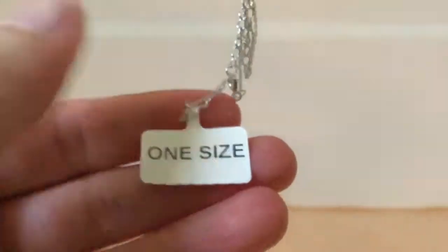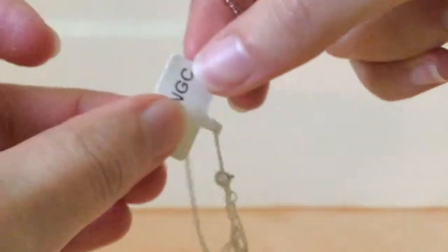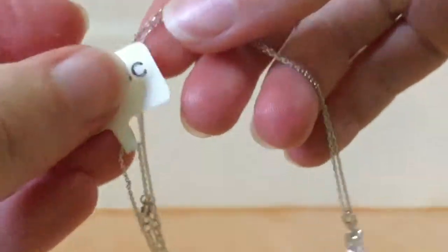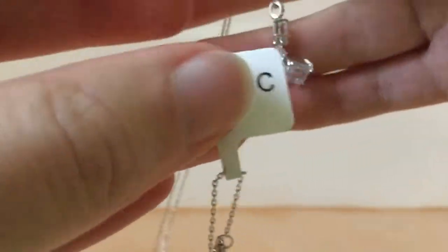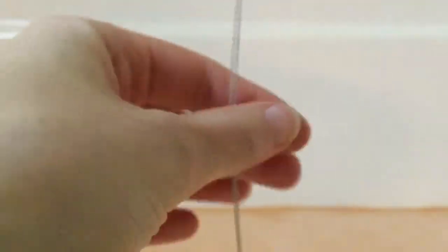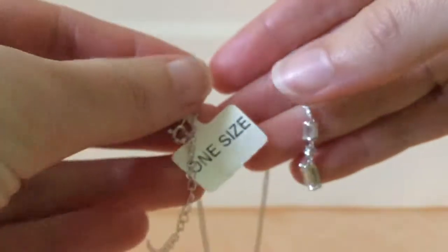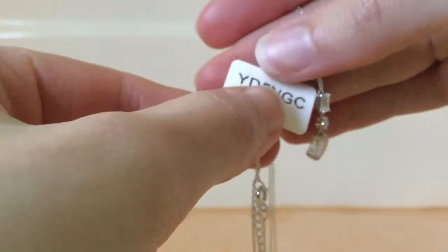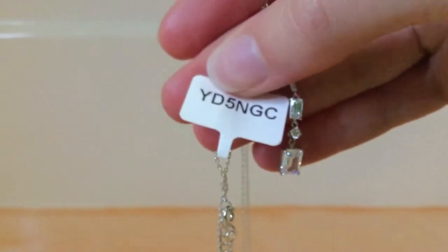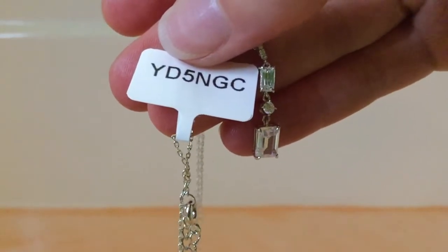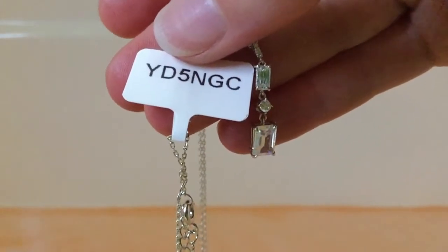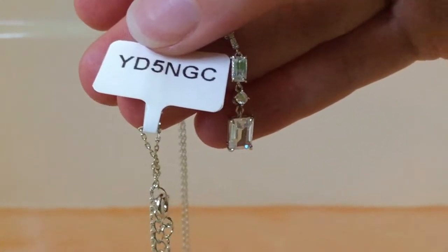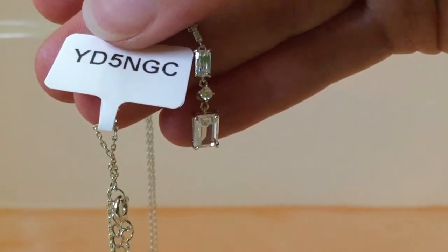So the code is, let me just get this like this. Let me just get this. So it's YD5 and GC.